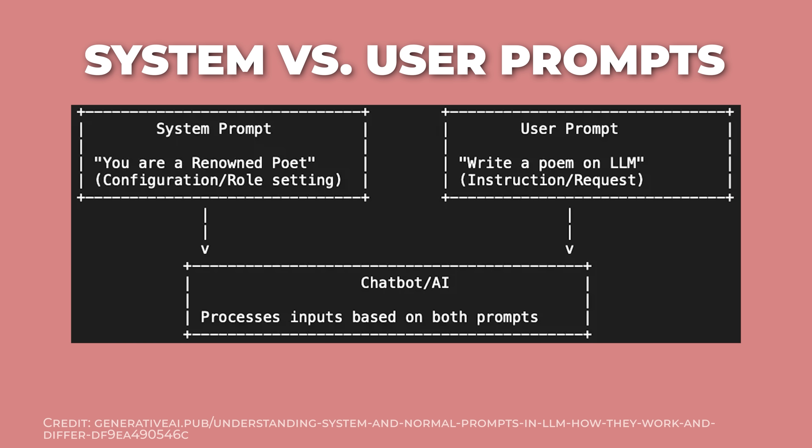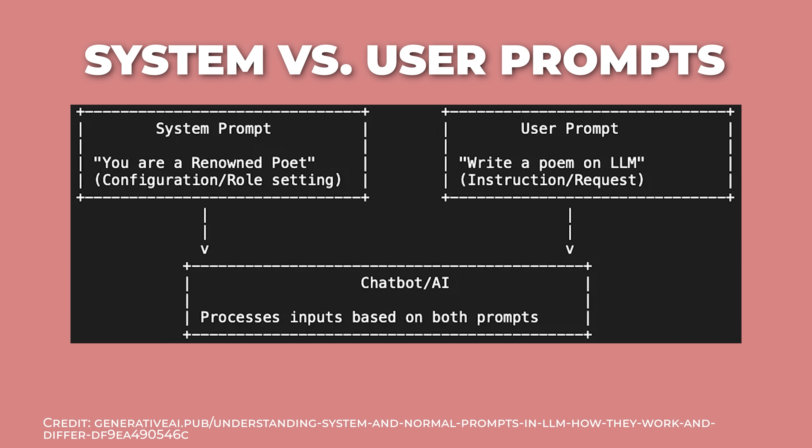There are actually two types of prompts. The system prompt is like the house rules — it sets the model's default behavior and stays the same for every conversation. The user prompt is your specific request right now. Think of the system prompt as telling someone 'you are a professional email writer,' and the user prompt as 'write an email declining this meeting.'